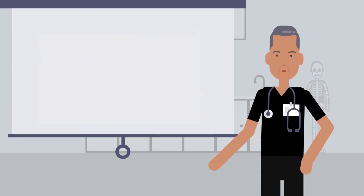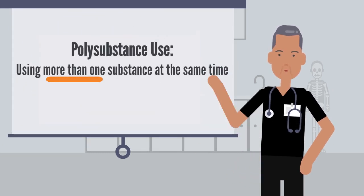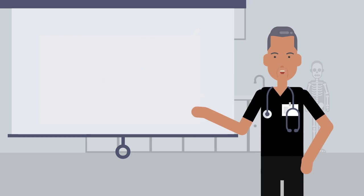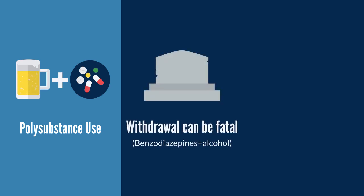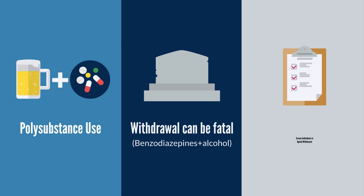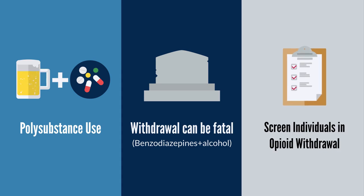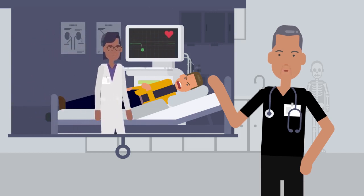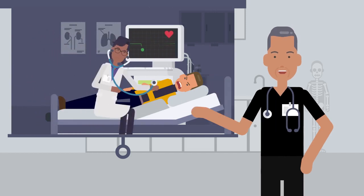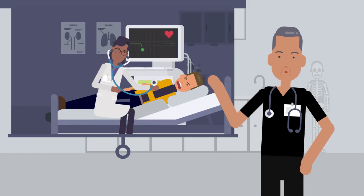Given the tendency for polysubstance use, which is using more than one substance at the same time, it's important to understand that benzodiazepines and alcohol, which are commonly used concurrently with opioids, are the only two substances in which withdrawal can be fatal. When someone is experiencing opioid withdrawal, they should be screened for additional substance use and potential withdrawal, as this can complicate their withdrawal process and, in the case of alcohol and benzodiazepine withdrawal, potentially be fatal. Although a person cannot die as a result of opioid withdrawal, it is extremely distressful and should be conducted under medical care, where comfort medications can be provided to address the withdrawal symptoms and vitals can be monitored.